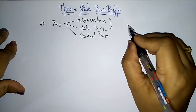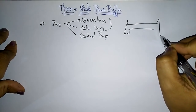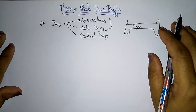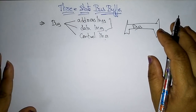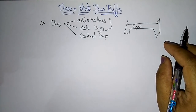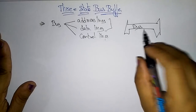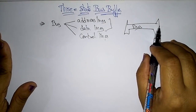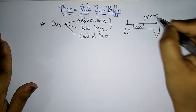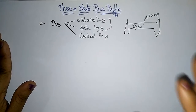These three lines will be in the bus. A bus structure consists of a set of common lines for each register through which binary information can transfer one at a time. Through this bus, binary information is transferred in the form of ones and zeros, one bit at a time.